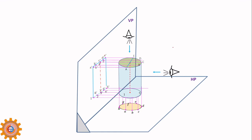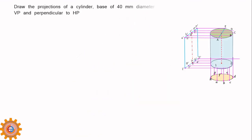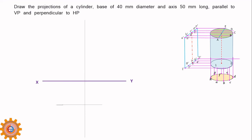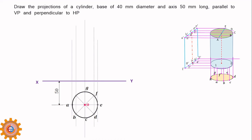Next: draw the projections of a cylinder — base 40 mm diameter, axis 50 mm long, parallel to VP and perpendicular to HP. We have a vertical line and a horizontal line forming a square area. We put both distances. We look at the side of a circle and put a direction. We divide the circle, and put the names in the top view and in the front view.